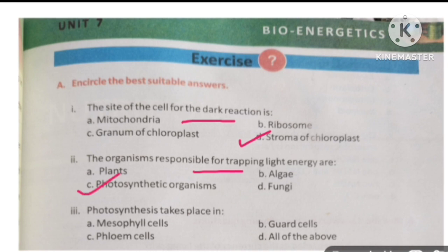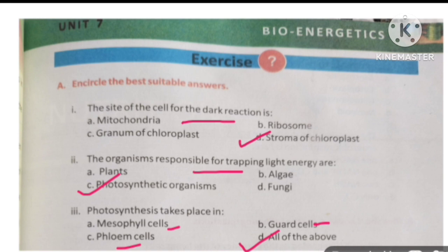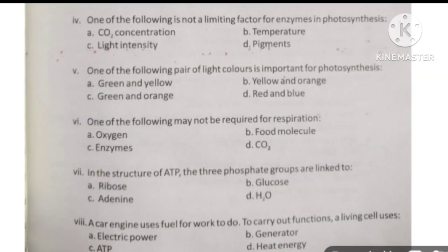Next, photosynthesis takes place in: option A, mesophyll cells; option B, guard cells; option C, phloem cells; and D, all of these. The correct option is all of these. Next MCQ: one of the following is not a limiting factor for photosynthesis. Pigments are not a limiting factor.